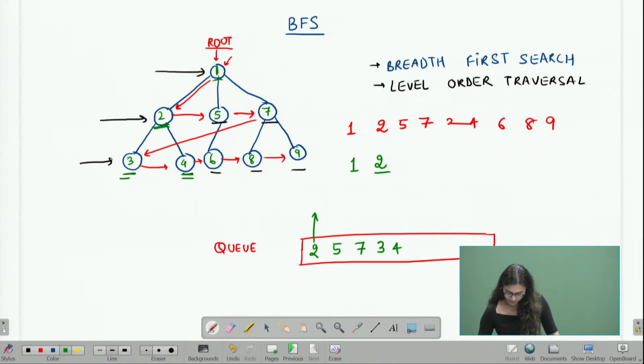Now my queue's front is 5, so I can pop 5, I can explore 5.